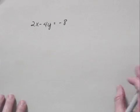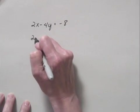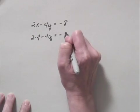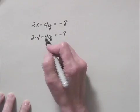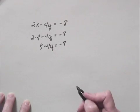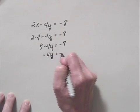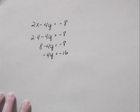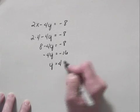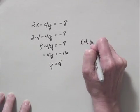Let's go back and let x equal 4. When we do that, we have 2 times 4 minus 4y equals negative 8, or 8 minus 4y equals negative 8. If I subtract 8 from both sides, I have negative 4y equals negative 16. Dividing by negative 4 on both sides, we have y equals 4. So another point on the graph is 4, 4.